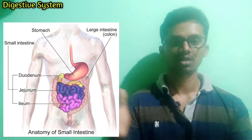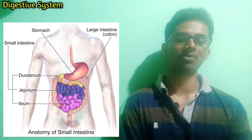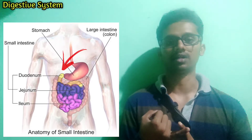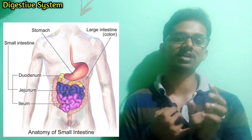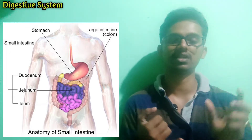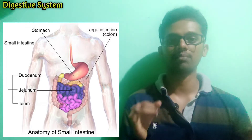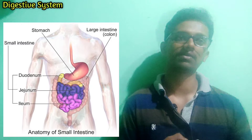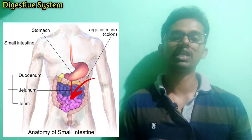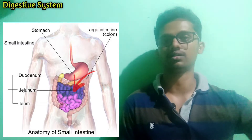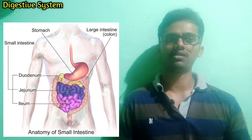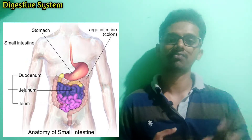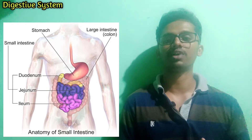Just as the stomach has 3 areas — fundus, body, and pylorus — the small intestine also has 3 parts. The first is the Duodenum, which is the starting region where the small intestine begins after the stomach. The second is the Jejunum, which is the upper central area and a large region. The third is the Ileum. The Duodenum makes up only 5%, the Jejunum 40%, and the Ileum 60% of the small intestine.